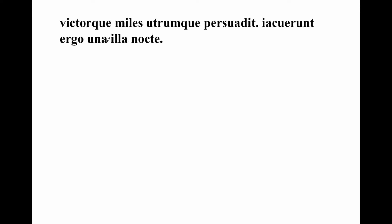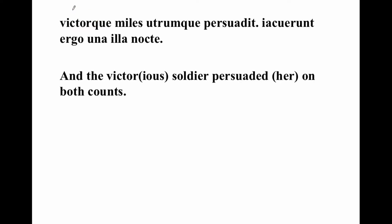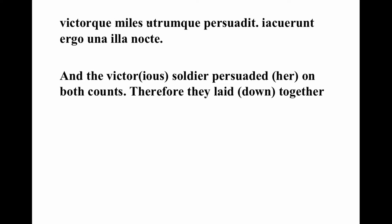Victor miles utrumque persuadet, iacuerunt ergo una illa nocte. The victorious soldier — victor is actually a noun meaning the victor or the champion — persuaded her utrumque, on both counts: he persuaded her to eat, and now he persuaded her to iacuerunt ergo una illa nocte. Therefore, ergo, iacuerunt — they laid down. In ancient times they would use this as a euphemism for having sexual intercourse. They laid down una, together, and illa nocte is an ablative of time — they laid down together in that night.